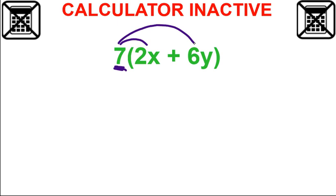So seven times two X, we just multiply the numbers. Seven times two is 14, still has the X. Seven times six Y, seven times six is 42, still has the Y. That's it.